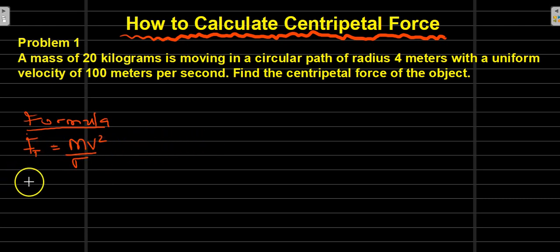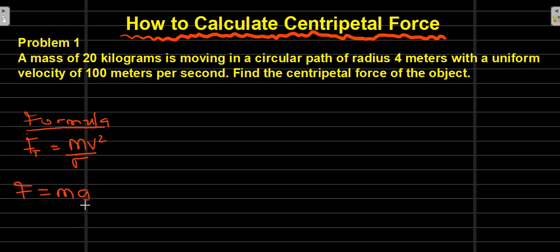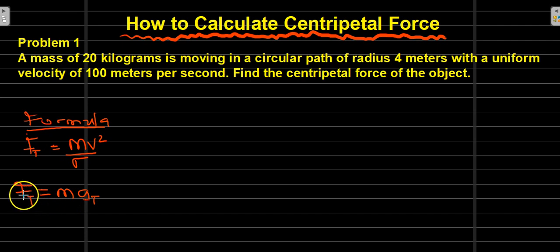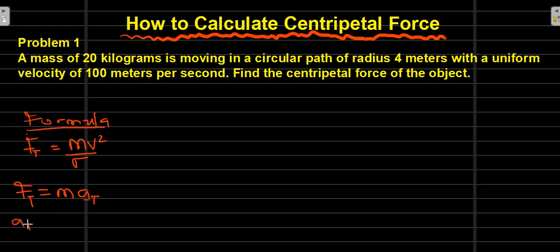If you could remember, we have F which is equal to mass times acceleration. And this acceleration represents centripetal acceleration. Therefore, we write it as a of t, and F of t represents centripetal force.